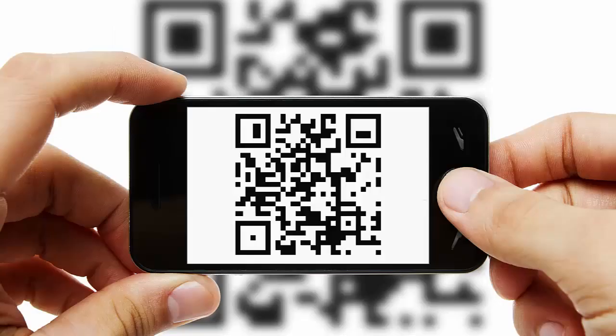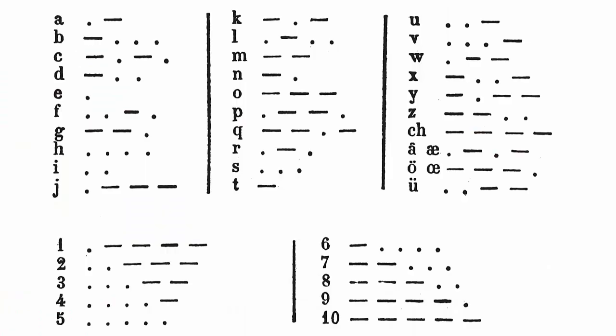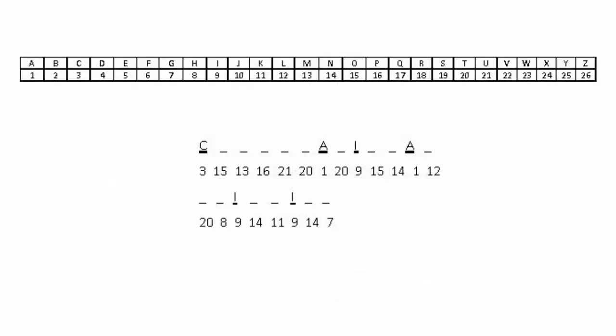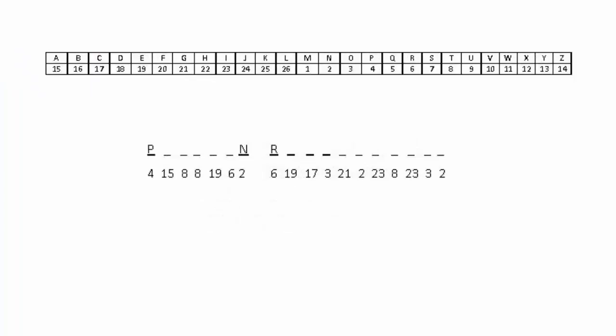Codes are systems of symbols used to represent other symbols to disguise messages. To be able to decode this type of message, the user must identify the pattern used for symbol substitution. For example, a very simple code might be based on a pattern of numbers representing letters, such as 1 equals A, 2 equals B, 3 equals C, etc. To make a code like this more difficult to break, the letter-number patterns may be shifted.